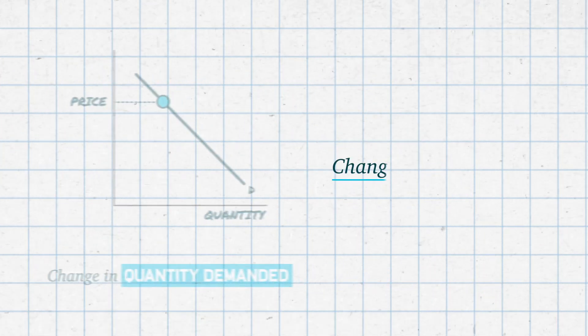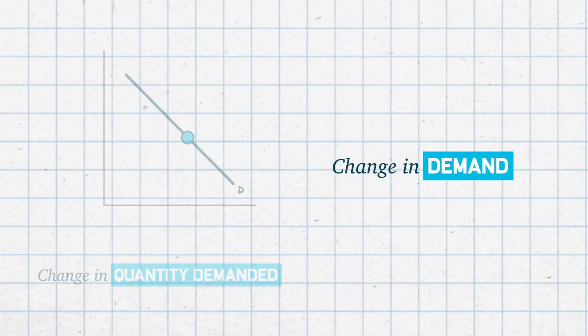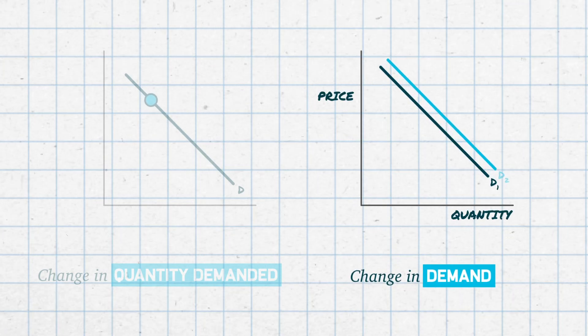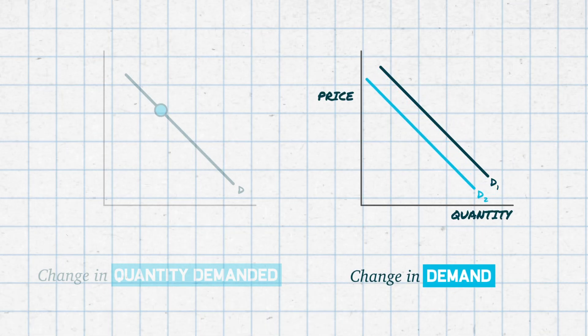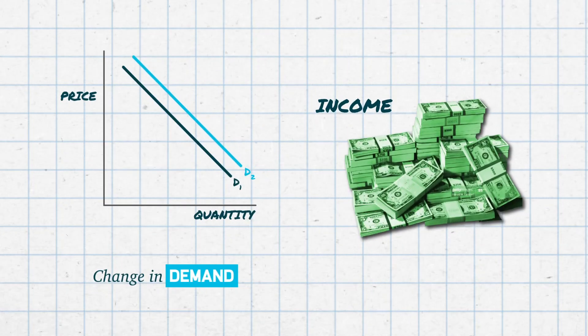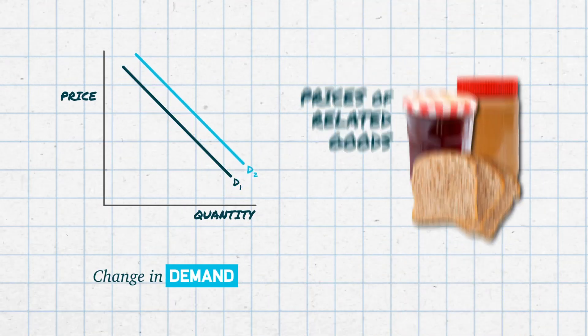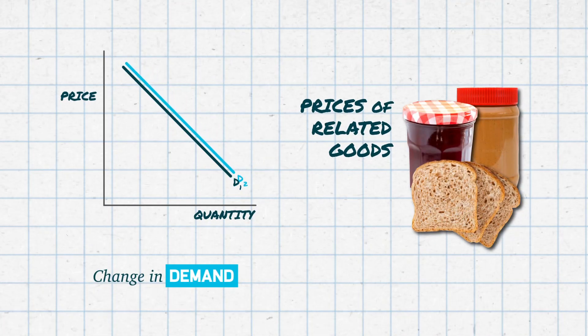A change in demand refers to a shift in the demand curve. That's caused by one of the shifters — income, preferences, changes in the price of related goods, and so on.